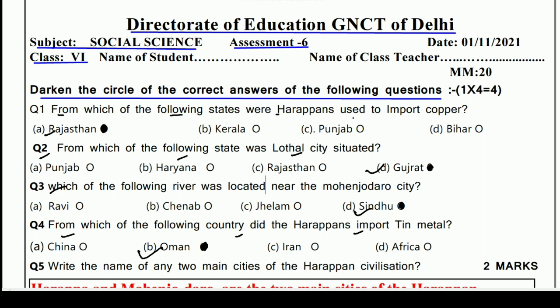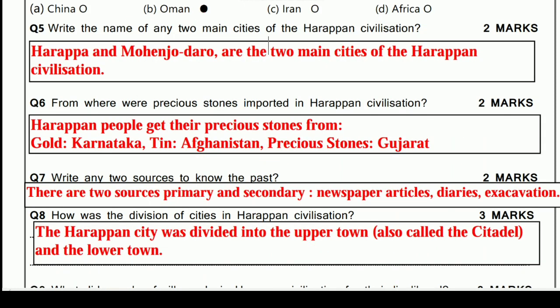Now some subjective type questions. Question 5: Write the name of any two main cities of Harappan civilization. Harappa and Mohenjo-Daro are the two main cities of Harappan civilization. Question 6: From where were precious stones imported in Harappan civilization? Gold came from Karnataka, tin was imported from Afghanistan, and precious stones were imported from Gujarat.